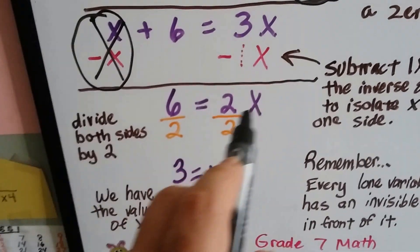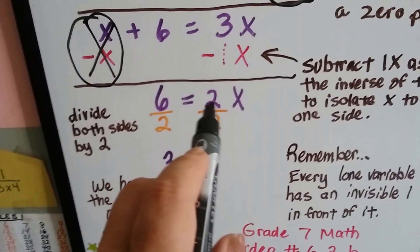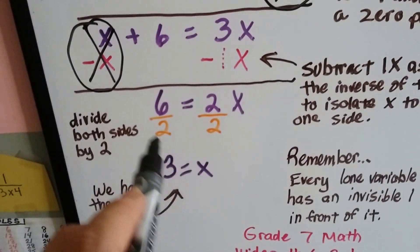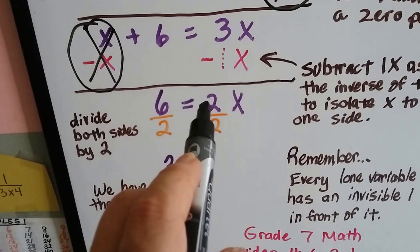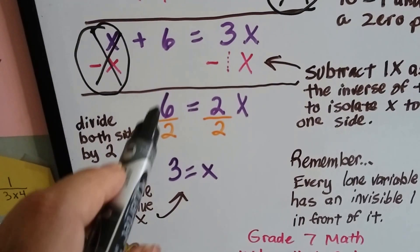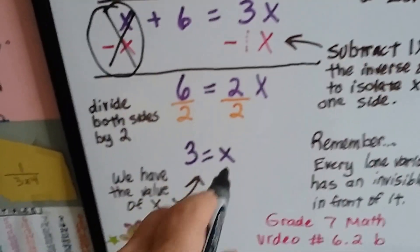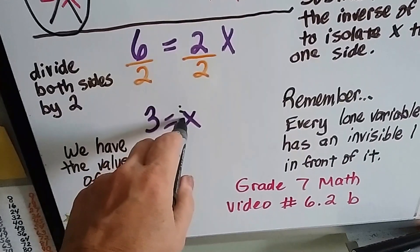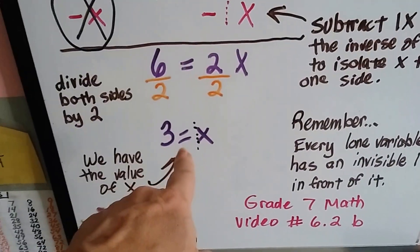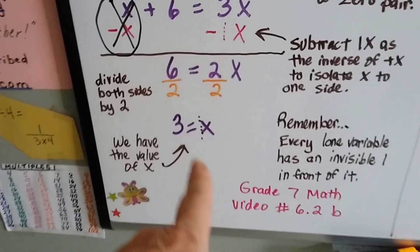Now, because 2x is multiplication, the inverse operation would be division. So we're going to divide both sides by this 2. 6 divided by 2 is 3. 2 divided by 2 makes 1. So that makes that invisible 1, our famous invisible 1. Do you remember that from last year? And we have the value for x, it's 3.